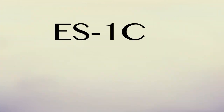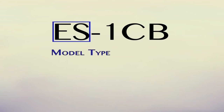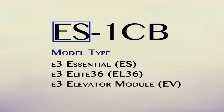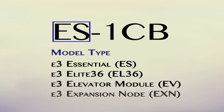Displayed on screen is the E3 model number, which can be broken up into four parts. Part one of the model number is the model type. There are four different model types: E3 Essential, or ES; E3 eMERGE Elite 36, or EL36; Elevator Module, or EV; and Expansion Node, or EXN.